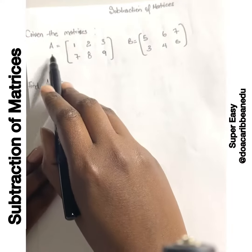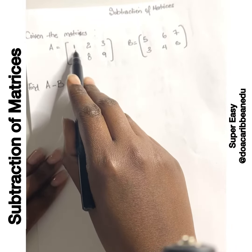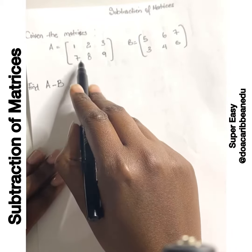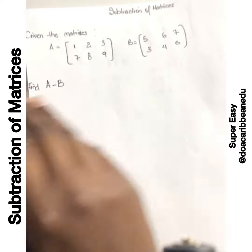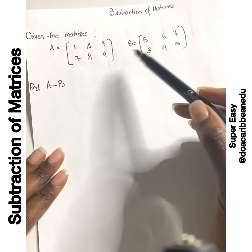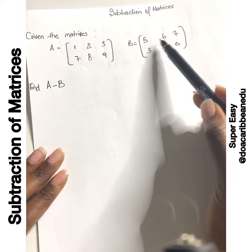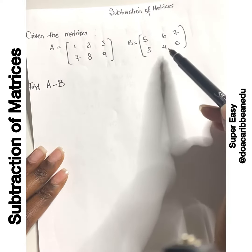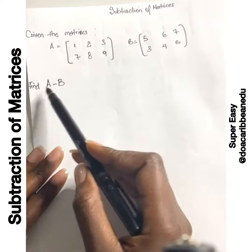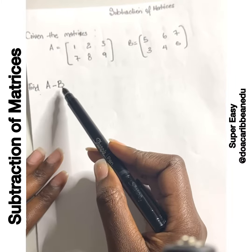Given the matrices A, which is equal to 1, 2, 3, 7, 8, and 9, and B, which is equal to 5, 6, 7, 3, 4, and 5, find A minus B.